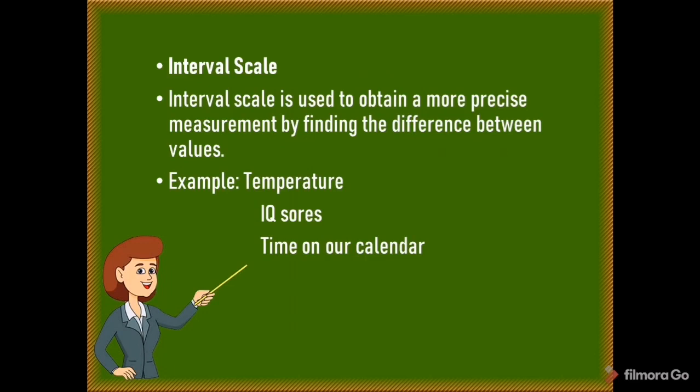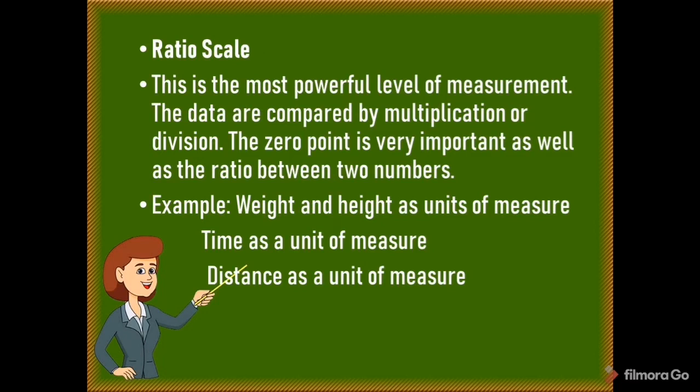The third level is the interval scale, used to obtain a more precise measurement by finding the difference between values. Examples are temperature, IQ scores, and time on hour calendars. The fourth level is the ratio scale, the most powerful level of measurement. Data are compared by multiplication or division, and the zero point is very important. Examples include weight and height, time, and distance as units of measure.